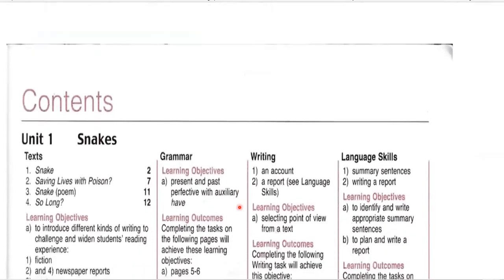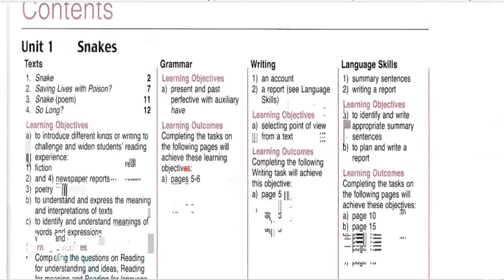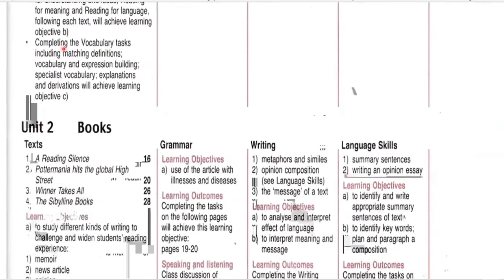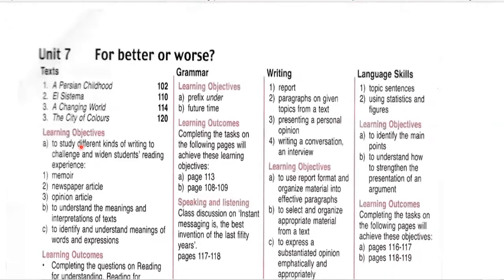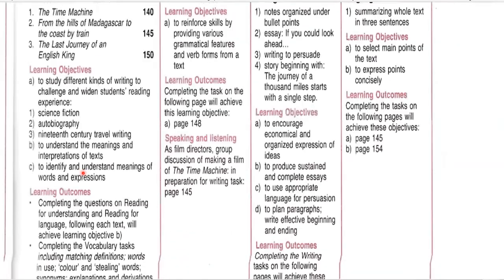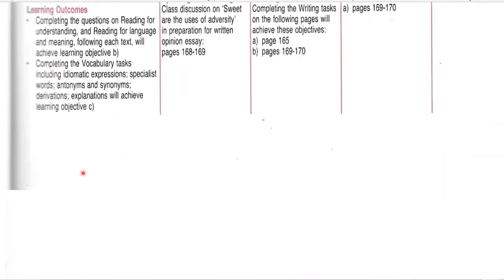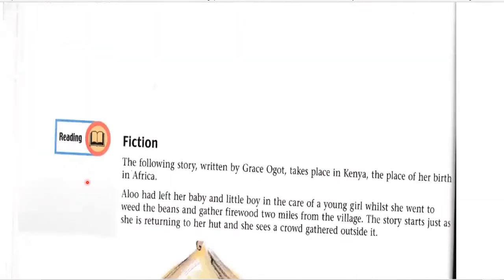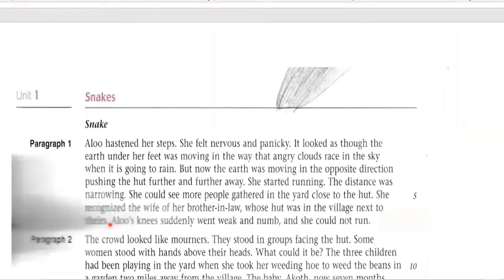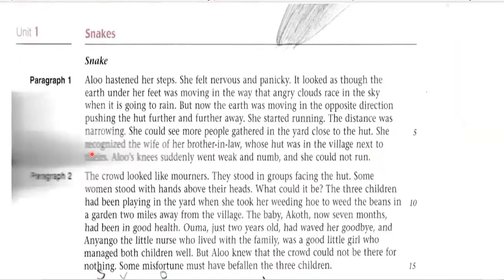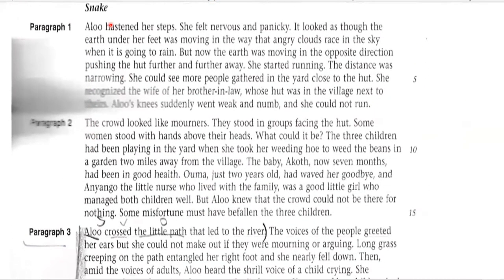The book is divided into units. Unit 1 is 'Snake' and under this all the things included are having the same topic. You can see the content page — there are actually 10 units in it. Now we are going to look at the first unit, the title is 'Snake.' The first story is actually a fiction story, and you know that a fiction story is a made-up story. The story's name is 'Snake' and it's set in Africa. The main character is Alu.